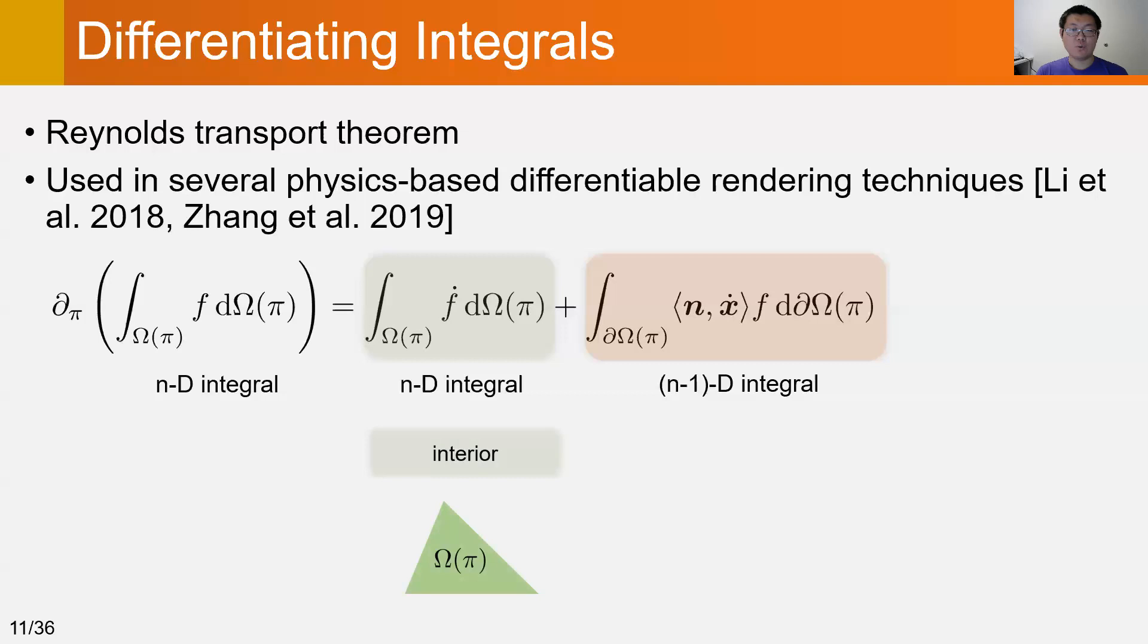The first term with the green color integrates the partial derivative of the original function f. We call it the interior term.